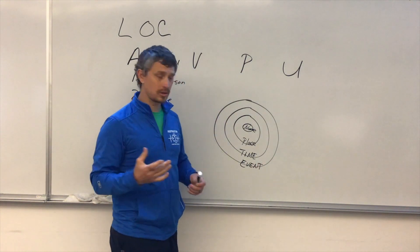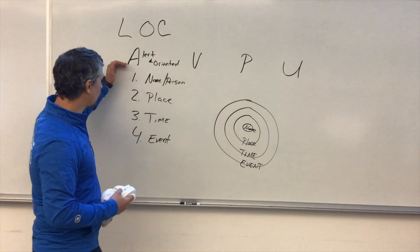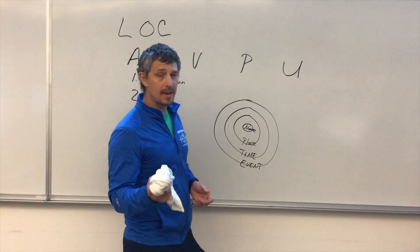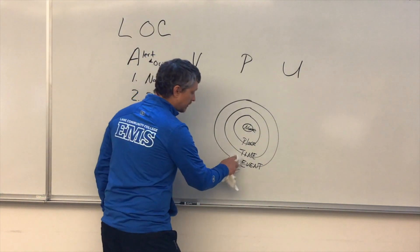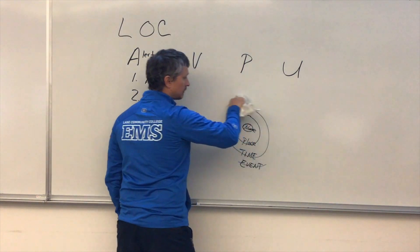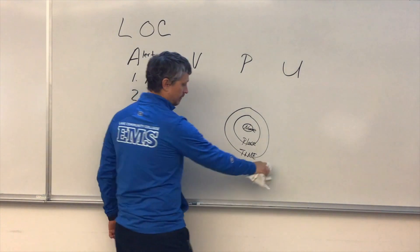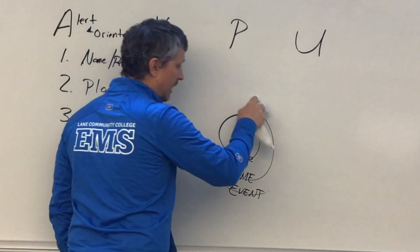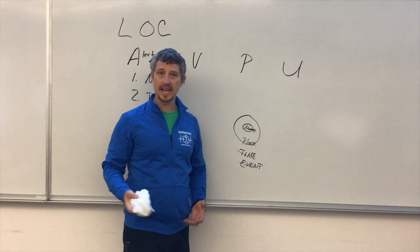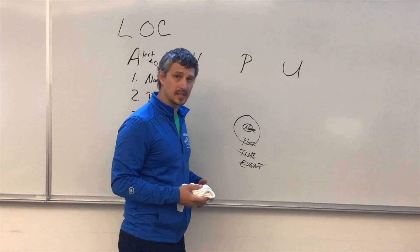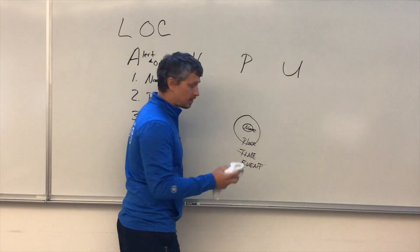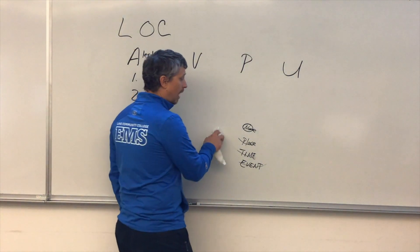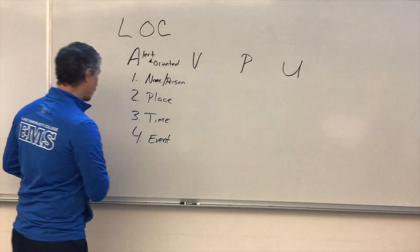Time is always changing, and then the event leading up to, or the event that happened to us just occurred. So when we ask these four questions to determine Alert and Oriented, we're looking to determine the short-term versus long-term memory. If you just came up and hit me in the head with a baseball bat, all of a sudden that event that happened I can't remember it—that's my short-term memory. There goes the event. Depending on how hard you hit me, I'm also going to lose the time—what time it is, is it night, is it day, is it 12 o'clock, 1 o'clock? It just kind of disappears. And then if you hit me even harder, I'll lose the place. I won't remember that I'm at Lane Community College. And if you hit me hard enough, I won't even remember my name.